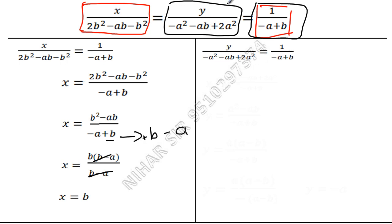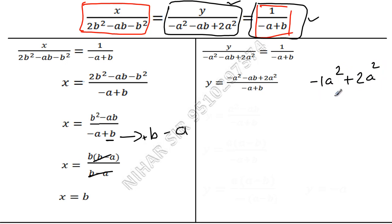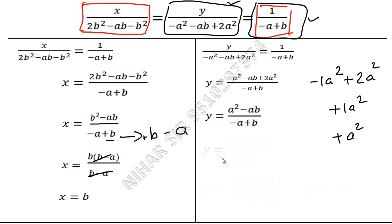Now let us find y. Taking the second ratio: minus a squared plus 2a squared gives plus a squared, so the numerator is a squared minus ab. Taking a as common gives a(a minus b). The denominator has minus a plus b. You may find this step confusing, so let me make it simple.